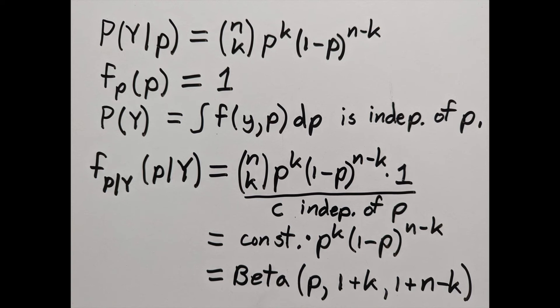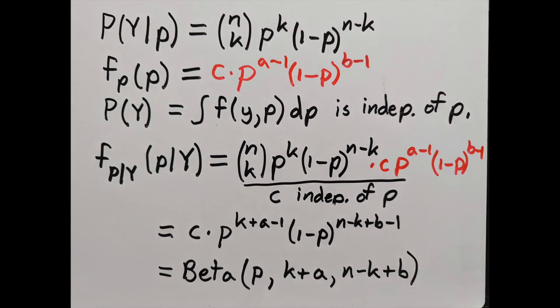But what if we already had some information about p? If we can describe that prior knowledge with a beta distribution, then f of p is a constant times p to the a minus 1 times 1 minus p to the b minus 1.